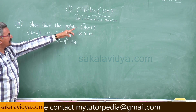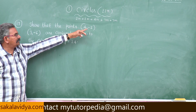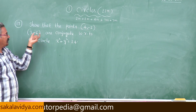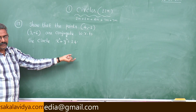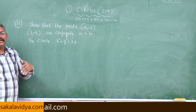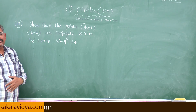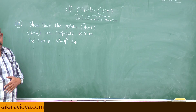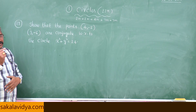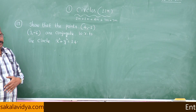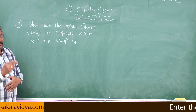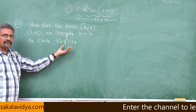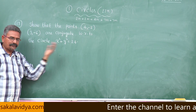That means (x₁, y₁) is one point and (x₂, y₂) is the other point. We substitute these into the formula and check whether s₁₂ is equal to 0 or not. If s₁₂ is equal to 0, then we say that the given two points are conjugate with respect to the given circle.